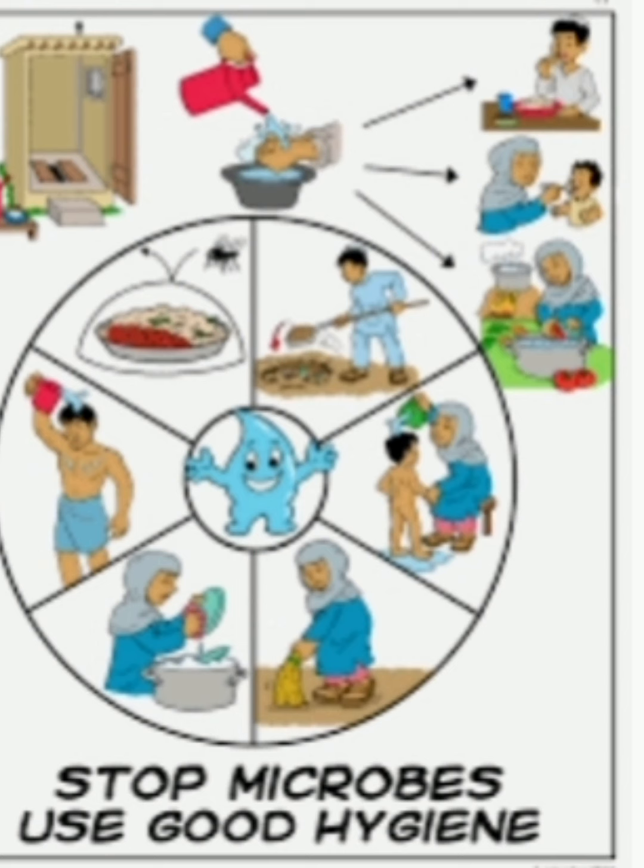By spraying kerosene and disinfectant on stagnant water, we can prevent mosquitoes from breeding. We all know that mosquitoes can cause diseases like malaria and dengue. So we must make sure there is no stagnant water anywhere, as it causes mosquitoes to breed more and more.